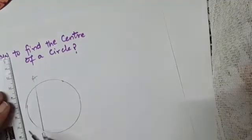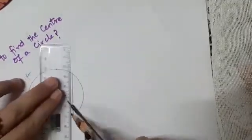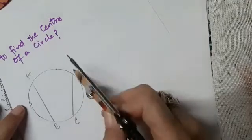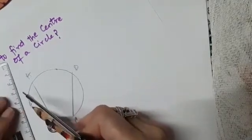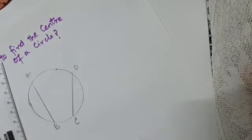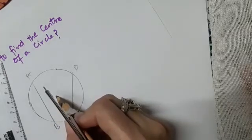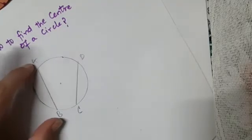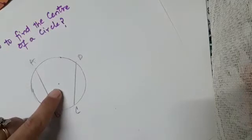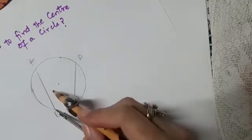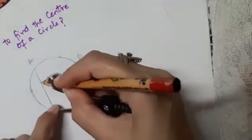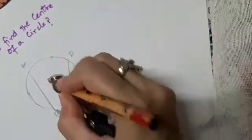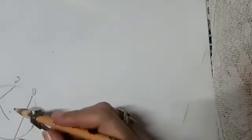We draw any chord AB and another chord CD which is not parallel to AB. I have already marked the center, so you will see that the perpendicular bisectors of AB and CD will pass through it. To get the perpendicular bisector of AB: with B as center and radius more than half of AB, make two arcs; then with A as center and the same radius, intersect the previous arcs.